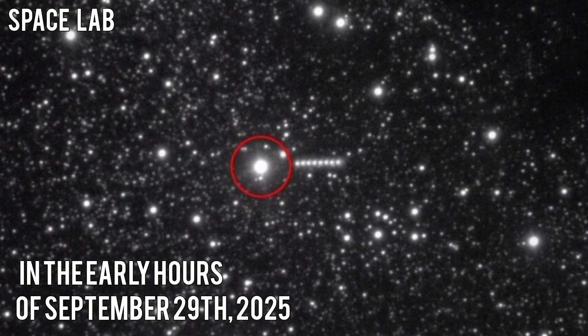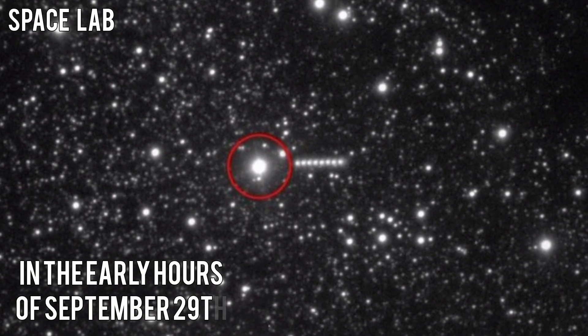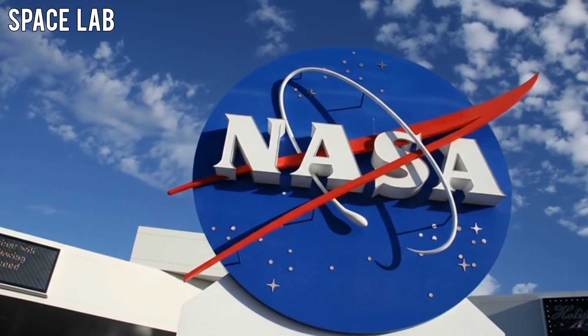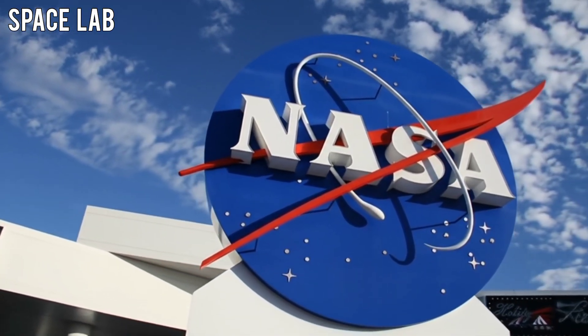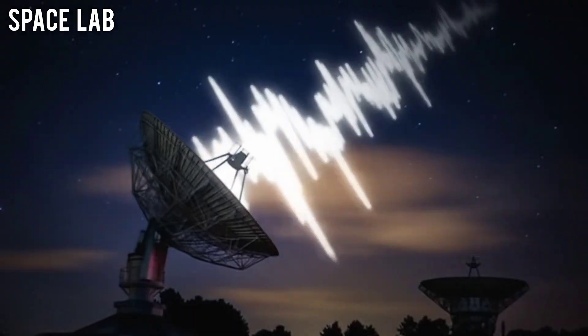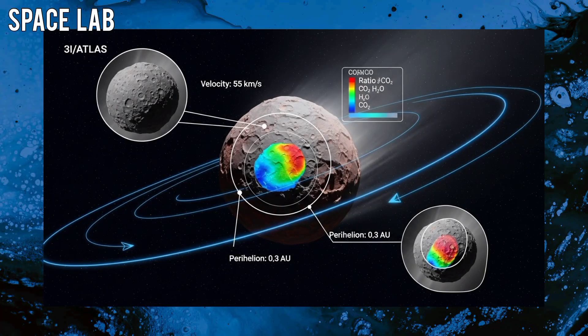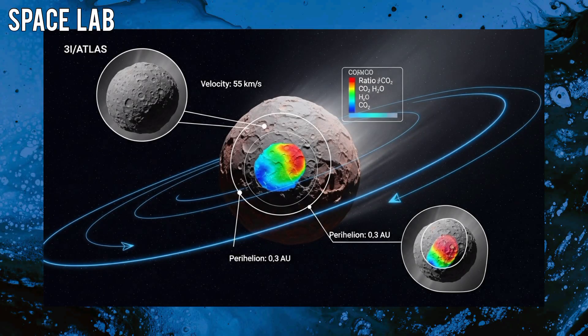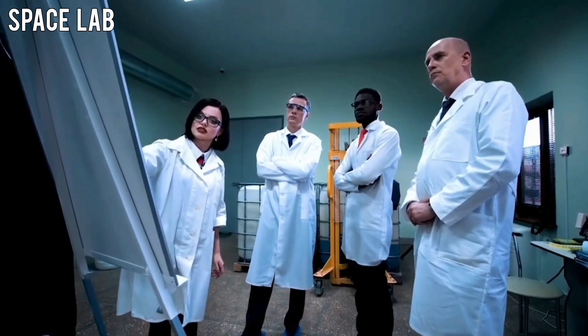In the early hours of September 29th, 2025, NASA's Deep Space Network picked up something unusual near Mars. The signal came from comet 31P ATLAS, the same mysterious object that's been puzzling scientists for years.